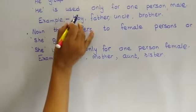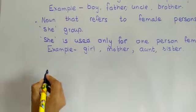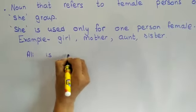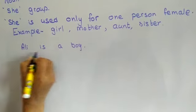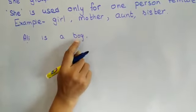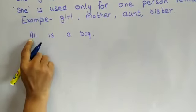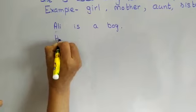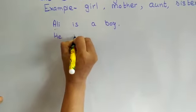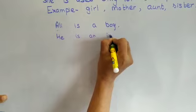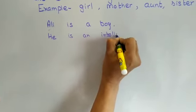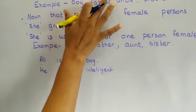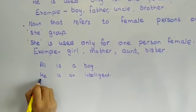As I said, he is used only for one person, male. I will give you one example. Ali is a boy — one person, boy, not boys. Now, instead of writing Ali again, we write: He is an intelligent boy. So here your doubt will be clear that he is used only for one person, male.